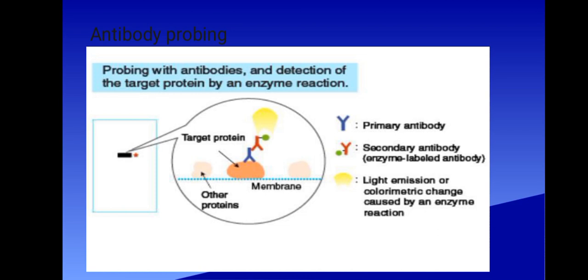Here we have an image showing probing with antibodies and detection of the target protein by an enzyme reaction. You can see the target protein, we have other proteins, we have the membrane. On the target protein you can see the one in blue is the primary antibody, the one in red is the secondary antibody, that's the enzyme-labeled antibody. You also have light emission or colorimetric change caused by an enzyme reaction. That's a simple image showing probing with antibodies and detection of the target protein by an enzyme reaction.